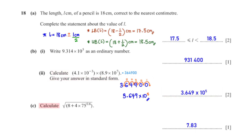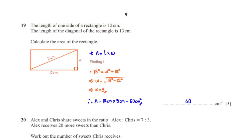Calculate the square root of 8 plus 4 times 75 raised to the power 0.6. Typing this into the calculator gives 7.83, rounded to 3 significant figures.